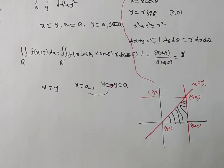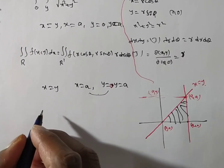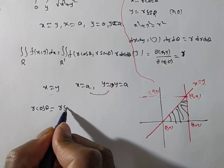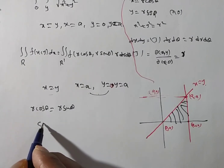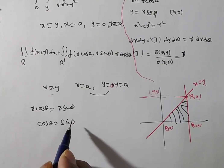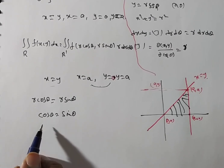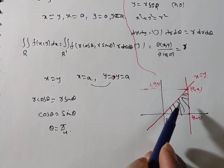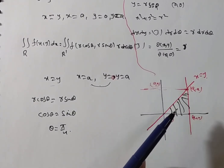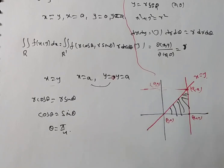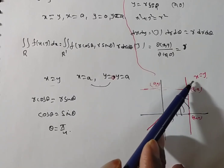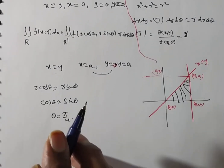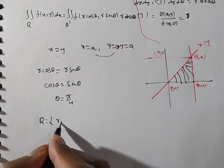Now, in this region we need to find the limits of r and θ. From x = y, substituting x = r cos θ and y = r sin θ, r cancels out and we get cos θ = sin θ. In the first quadrant, this gives θ = π/4. The region occupies the positive quadrant, specifically from θ = 0 to θ = π/4.